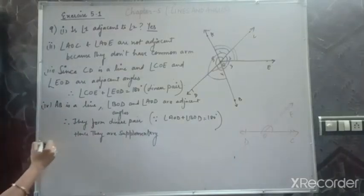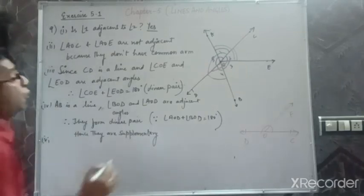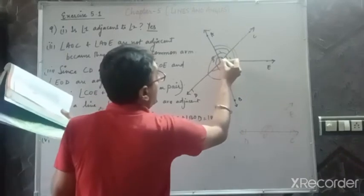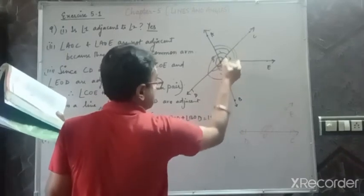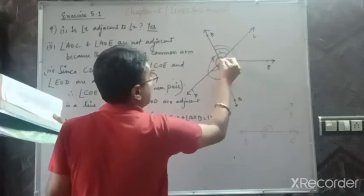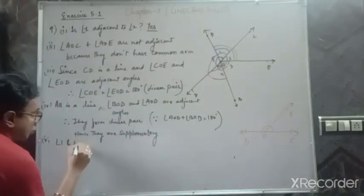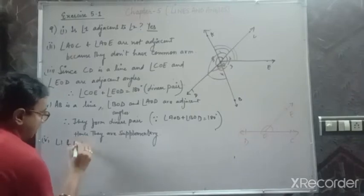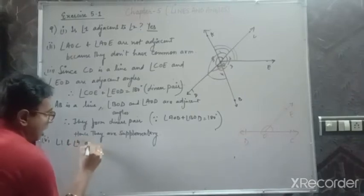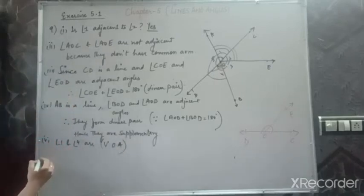Fifth part: is angle 1 vertically opposite to angle 4? Yes. If you see clearly, these two lines are intersecting and these angles are vertically opposite. Angle 1 and angle 4 are vertically opposite angles.